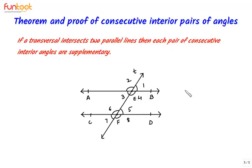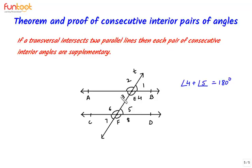We need to prove that each pair of consecutive interior angles are supplementary — that means angle 4 plus angle 5 is equal to 180 degrees, and angle 3 plus angle 6 is also 180 degrees.